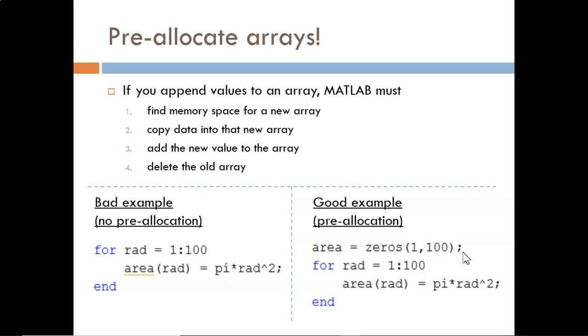Why is this advantageous? In the non-pre-allocation example, MATLAB is not told beforehand how large the array will grow. So the first time through the loop, area is just a 1 by 1 array because only one value has been computed thus far. In the next iteration, the second index is filled in, so the array expands to 1 by 2. In the next iteration, the third index is filled in, so the array expands to 1 by 3, and so on.